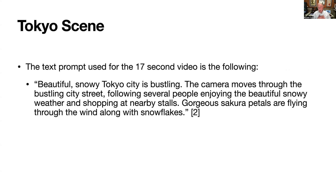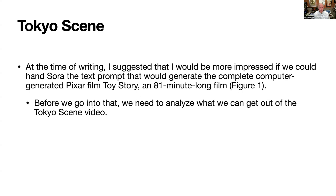The text prompt used for the 17-second video is the following: 'Beautiful, snowy Tokyo city is bustling. The camera moves through the bustling city street, following several people enjoying the beautiful snowy weather and shopping at nearby stalls. Gorgeous sakura petals are flying through the wind along with snowflakes.' So, a very short 17-second video is generated from that input prompt.